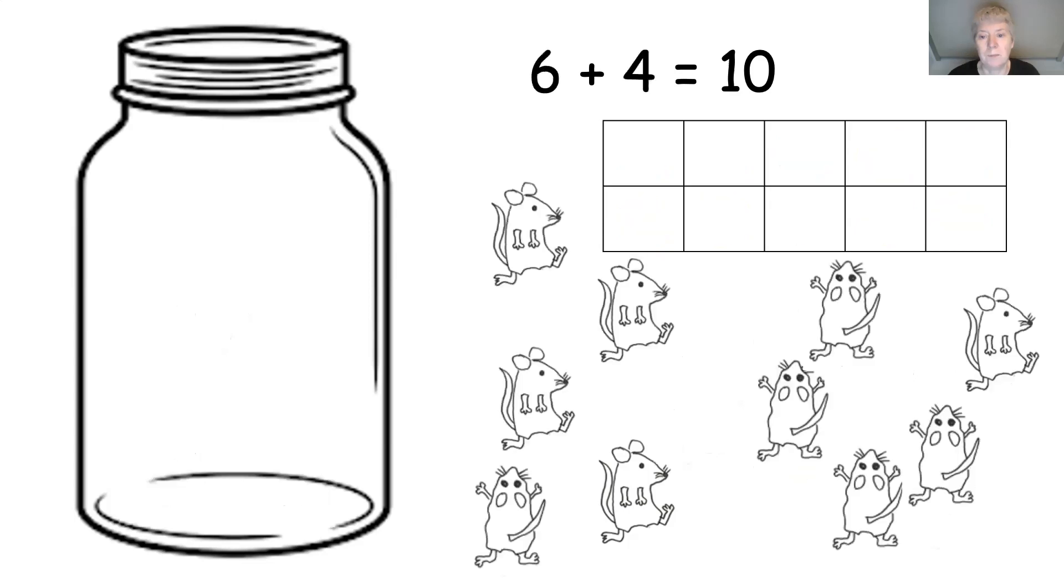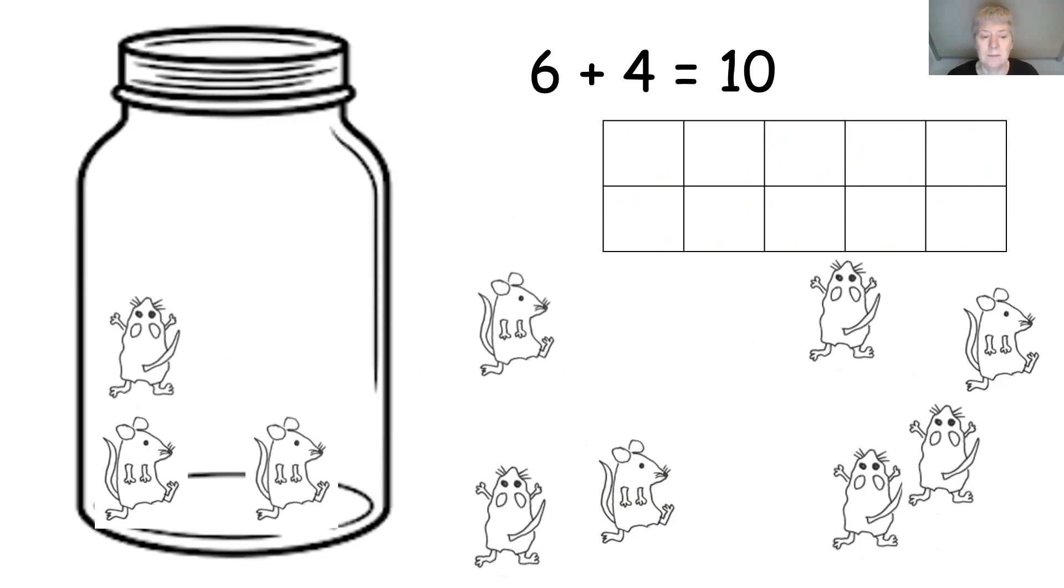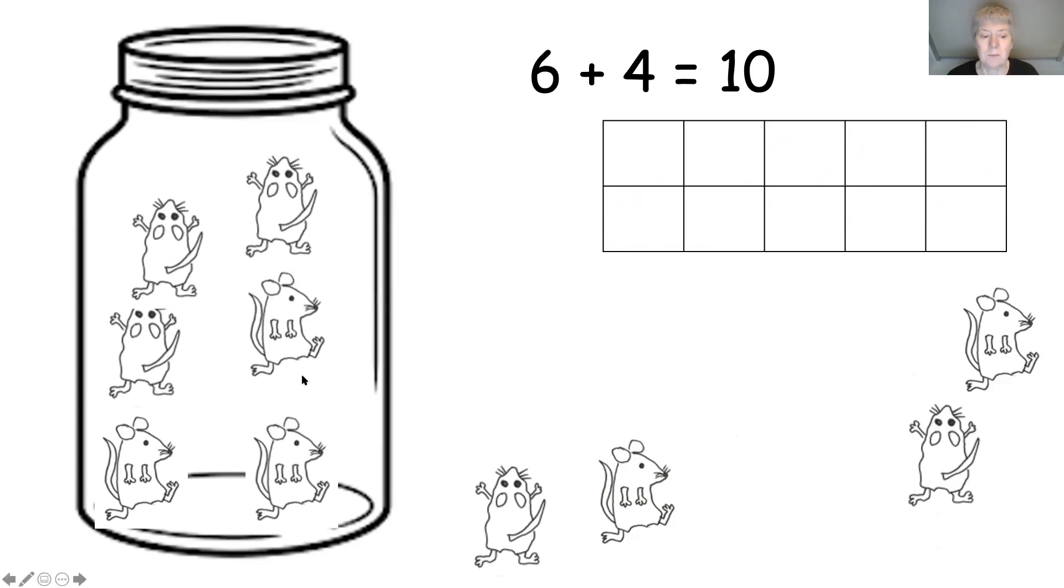Shall we try another one? This time we're going to put six mice in the jar. In they go. So we count them: one, two, three, four, five, six. Can you put six counters on your tens frame? Pause the video while you do it. Well then it should look like this. Here goes six counters onto my tens frame. And how many spaces are left?